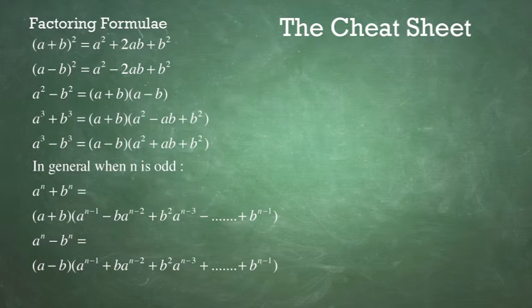Again, for N being an odd number, A to the N minus B to the N equals A minus B times A to the N minus 1 plus BA to the N minus 2 plus B squared A to the N minus 3, and so on, plus B to the N minus 1.